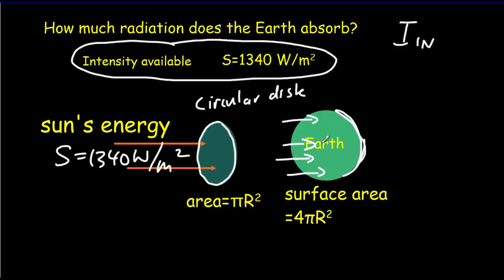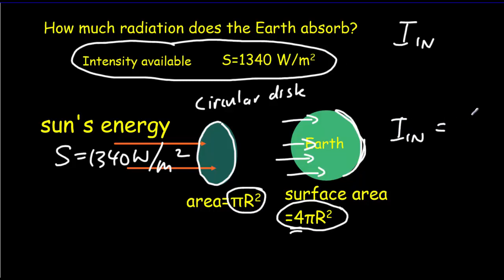Of course, that power is going to be spread out over a bigger area. The surface area of the Earth is 4πr², whereas the surface area of this circle is only πr², where r is the radius of the Earth. In other words, this is 4 times as large — we're taking that power and spreading it out over 4 times the area. That means the incoming intensity is going to be less than S by a factor of 4.